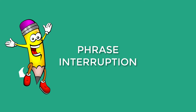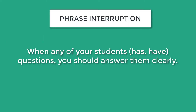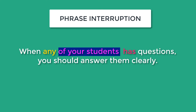And the last tricky subject-verb agreement is phrase interruption. Be careful when the subject is separated from the verb by a phrase, like in this example: when any of your students has questions, you should answer them clearly. The subject here is any, an indefinite pronoun, and it is separated from the verb by the prepositional phrase functioning as an adjective, of your students. We know that any is a singular indefinite pronoun, so the verb is has.